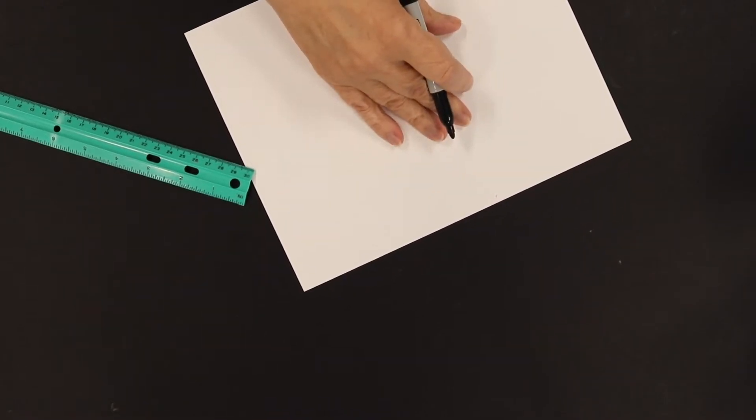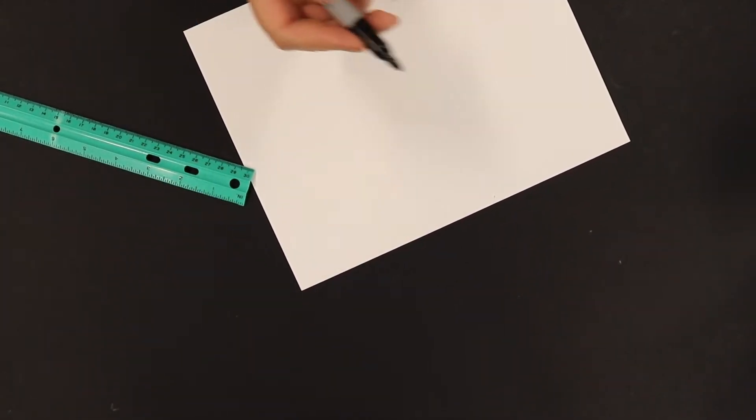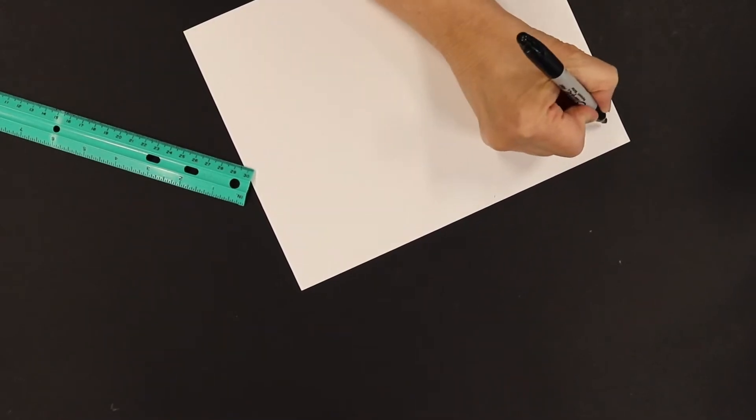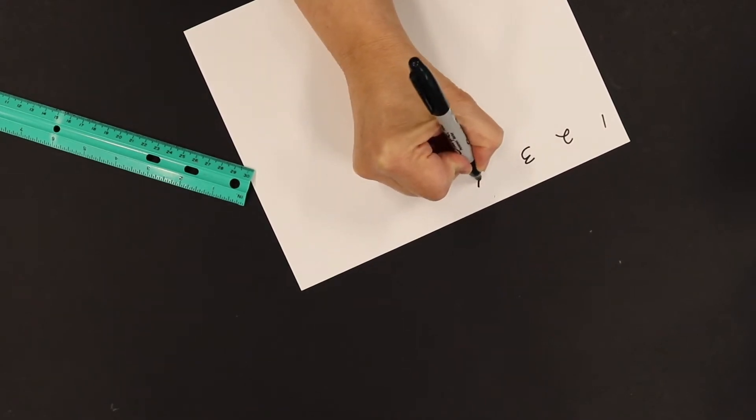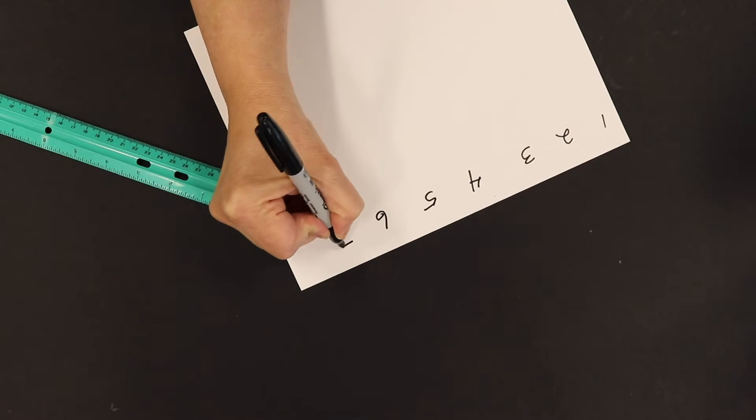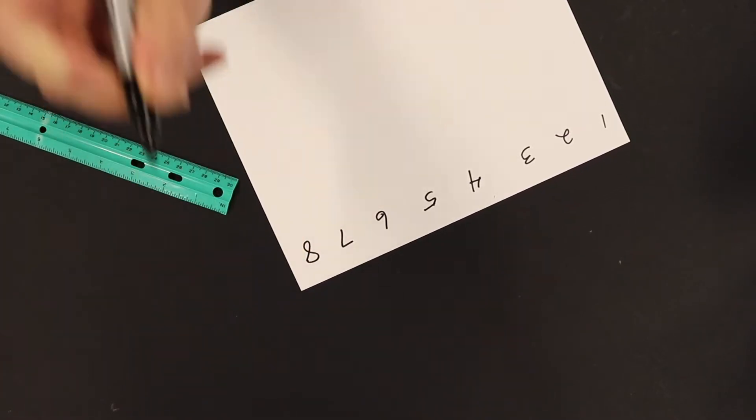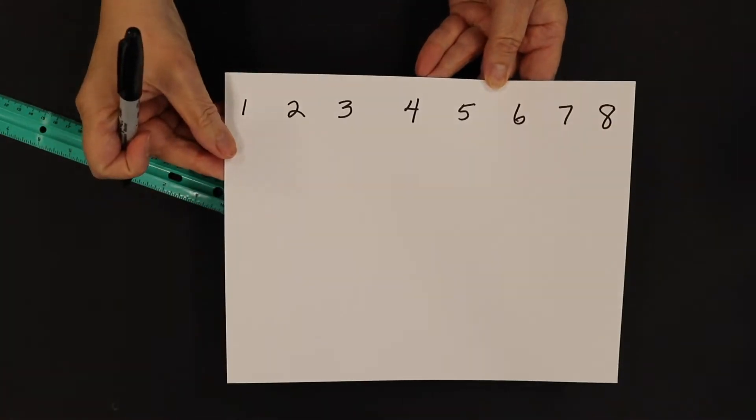Take a blank piece of eight and a half inch by eleven paper with the long side across the top and write the numbers one through eight spaced about an inch apart. You'll use this to keep track of your cut straws with the first being the longest and the eighth being the shortest. That's what it should look like.